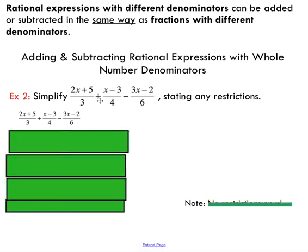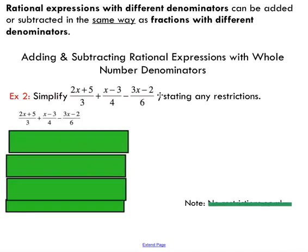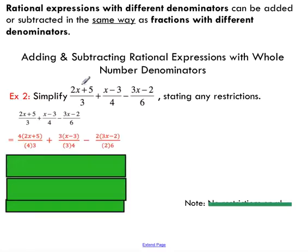Now let's look at examples where the denominators are not the same — exactly the same situation as the second warm-up example. We're going to find a common denominator, in this case among three denominators. I've got 3, 4, and 6. If you write out the multiples of 3, 4, and 6, you'll see that 12 is common between all three. So the goal is to make each of these denominators equal to 12.